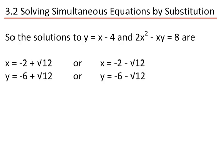This means I have two solutions. If x equals minus 2 plus the square root of 12, then y equals minus 6 plus the square root of 12. Or, if x equals minus 2 minus the square root of 12, then y equals minus 6 minus the square root of 12.